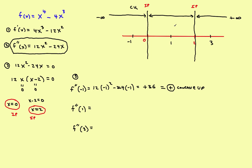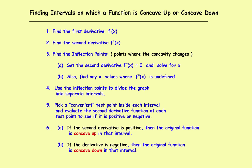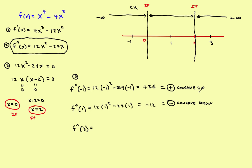Now for the second interval, plug in x = 1: f''(1) = 12(1)² - 24(1) = 12 - 24 = negative 12. We're not concerned about the numerical value, just the sign. Since it's negative, the function is concave down in the second interval, from 0 to 2.